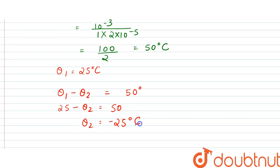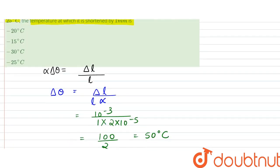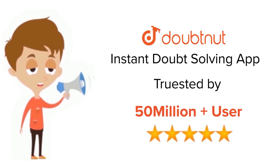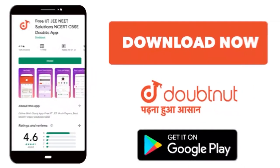Thank you. For class 6 to 12, IIT-JEE and NEET level, trusted by more than 5 crore students. Download DoubtNet app today.